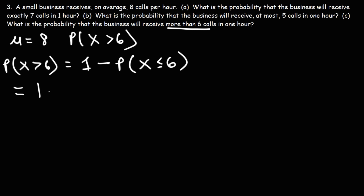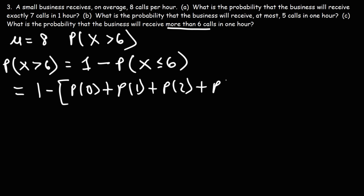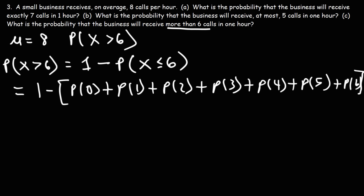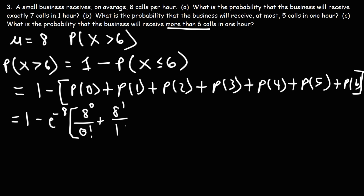So P(x>6) equals 1 minus [P(x=0) + P(x=1) + ... + P(x=6)]. Using the same procedure as part B, this is 1 minus e to the negative 8 times the sum: 8^0/0! plus 8^1/1! plus 8^2/2!, continuing up through x equals 6.